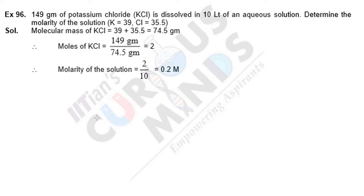Hello friends, let us solve this problem. 149 grams of potassium chloride (KCl) is dissolved in 10 liters of an aqueous solution. Determine the molarity of the solution given the atomic weights: K equals 39, Cl equals 35.5.